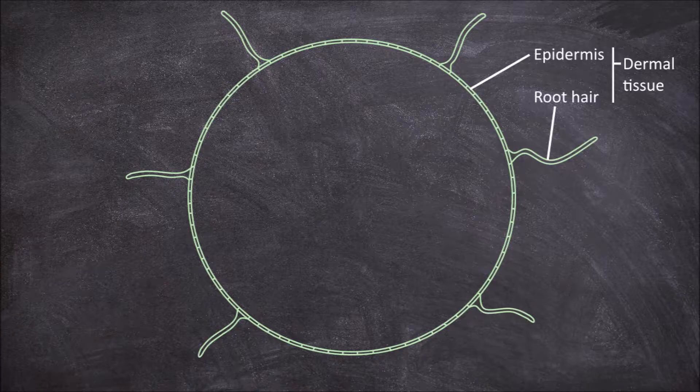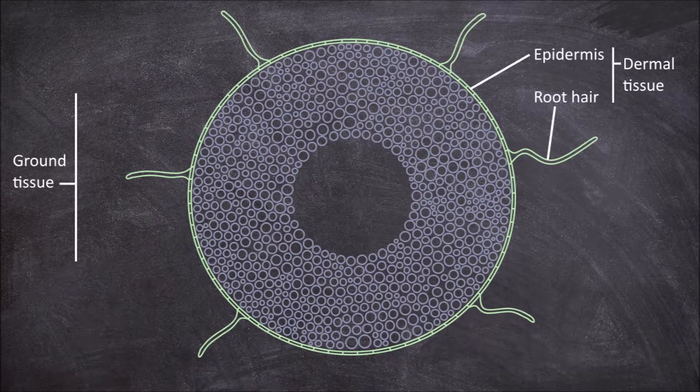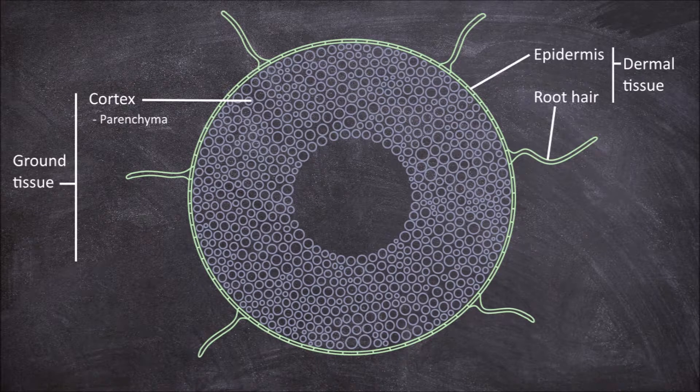In from the epidermis you find the ground tissue. The first layer of ground tissue is the cortex which is filled with parenchyma cells.